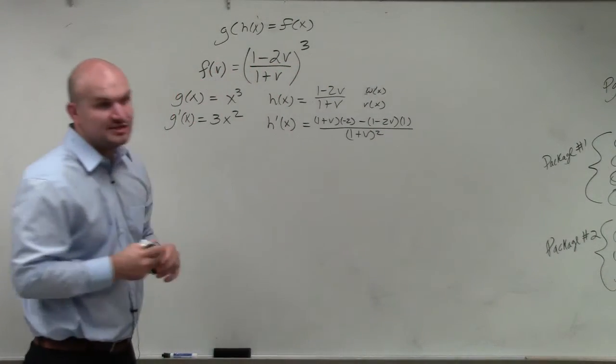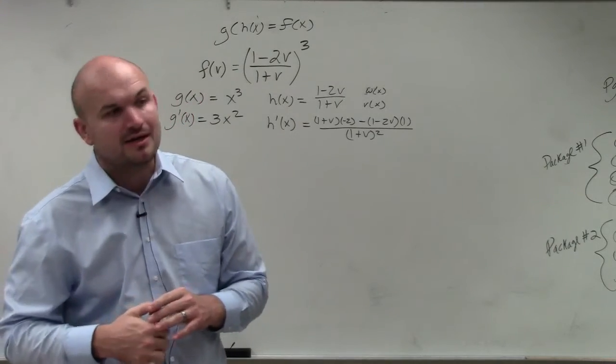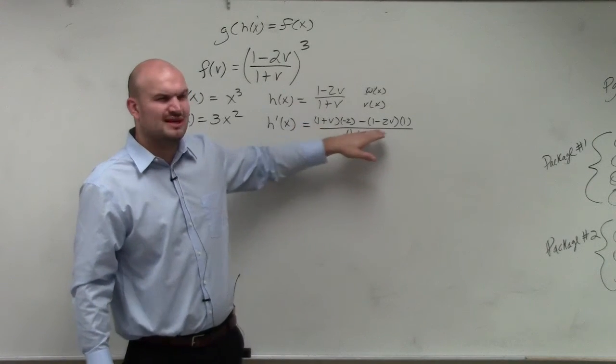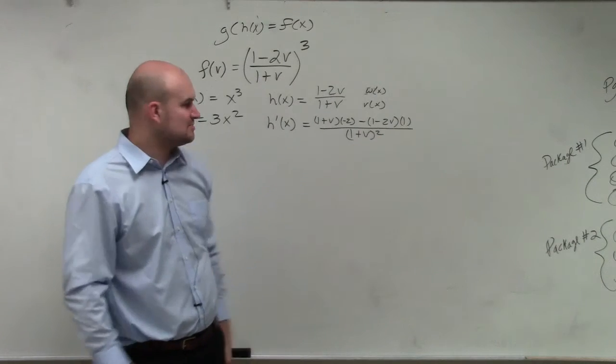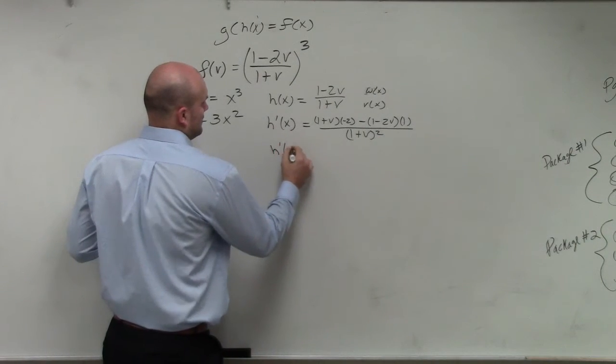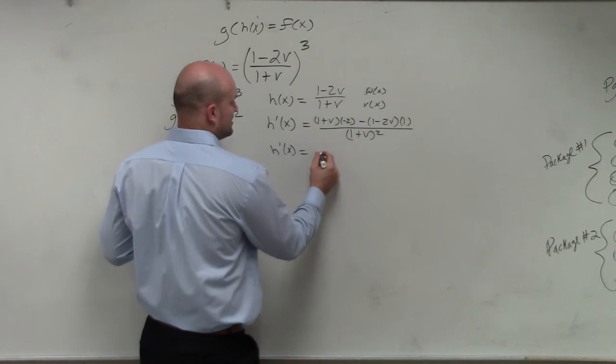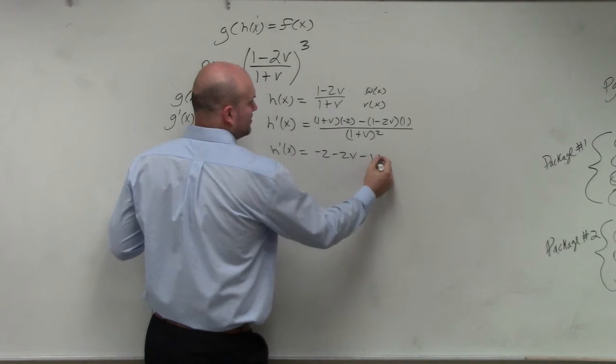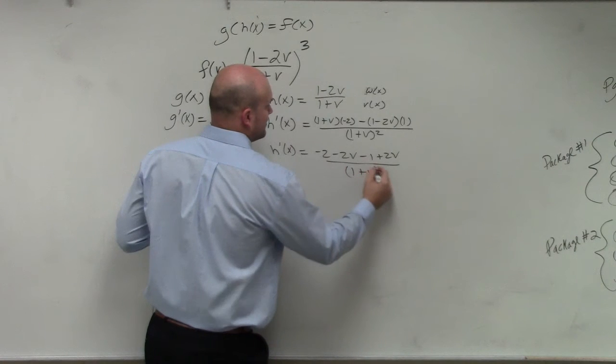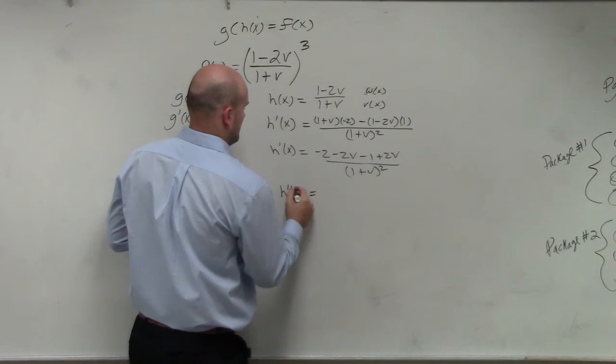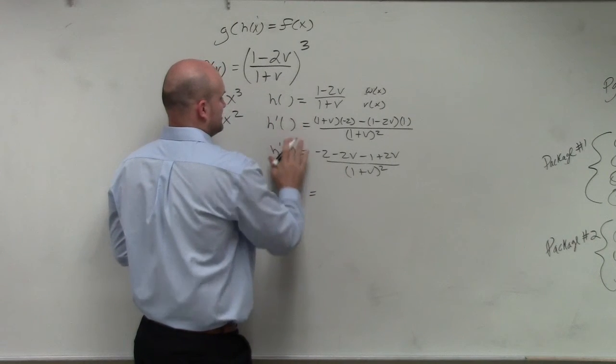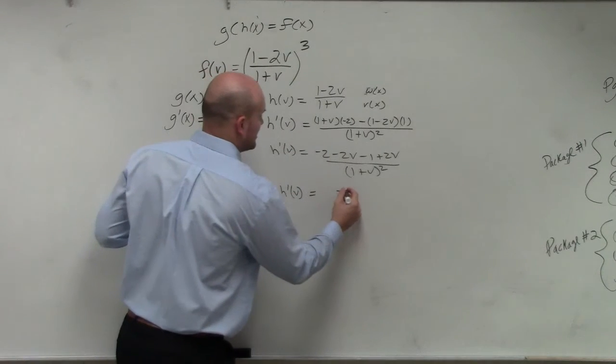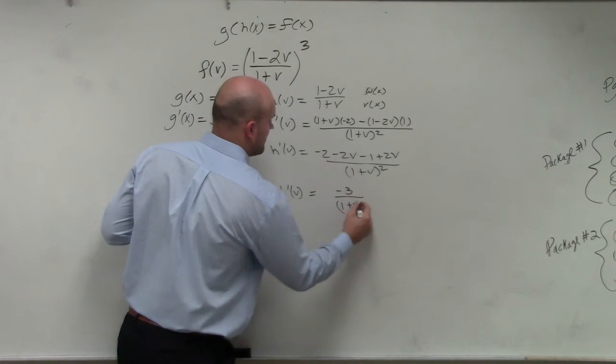All right? Now, obviously, we're going to want to simplify this. And on your quiz, I do say simplify. So basically, it's OK if you don't, you can leave this as a squared. But we would like to simplify the numerator, combine, collect like terms as much as possible. So h prime of x, let's just simplify this. So therefore, that's negative 2 minus 2v, let's see, minus 1 plus 2v, all over 1 plus v squared. I'm sorry, that's not x, this is all v's. So therefore, you can see that I end up with a negative 3 over 1 plus v squared.